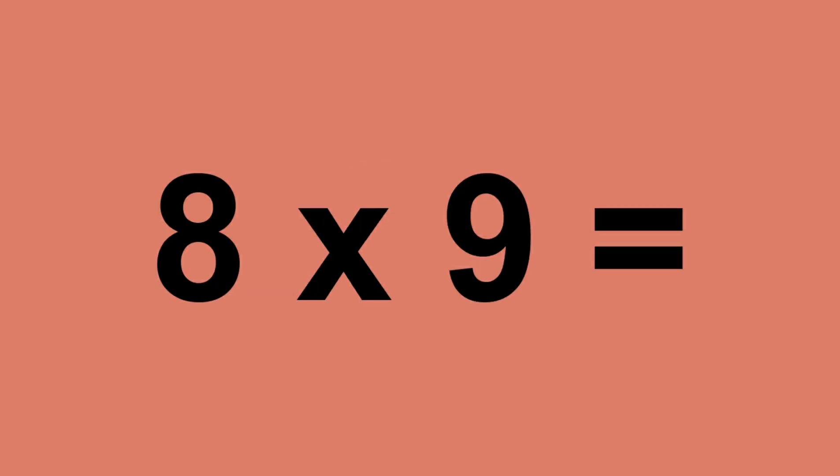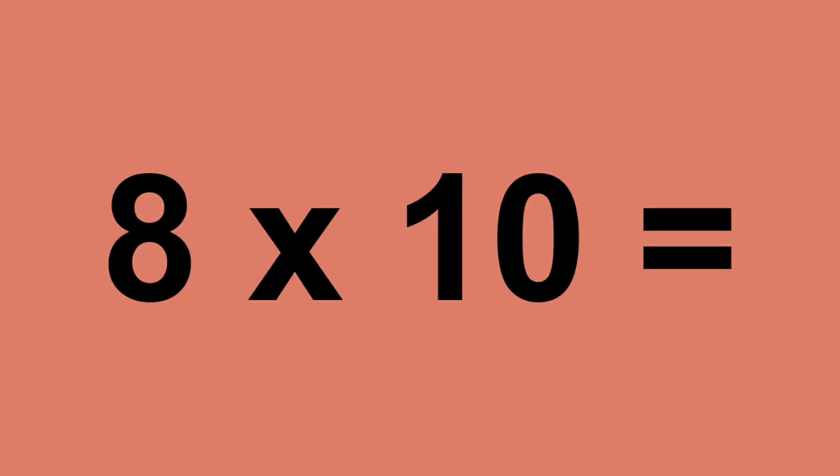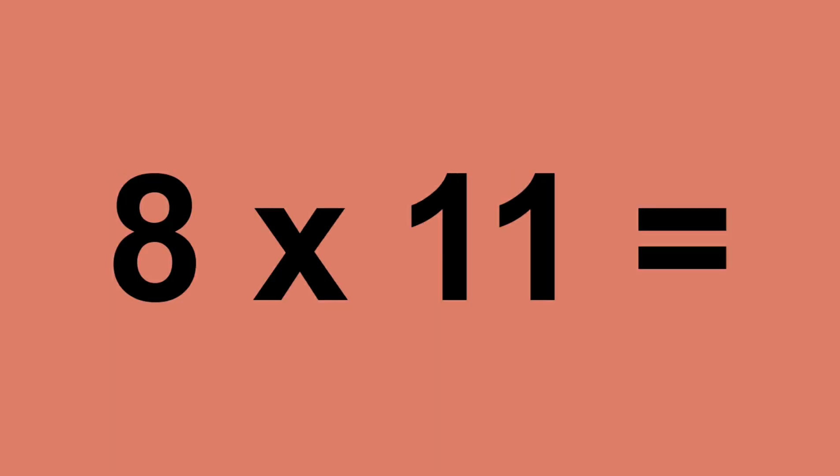Eight times nine equals seventy-two. Eight times ten equals eighty. Eight times eleven equals eighty-eight.